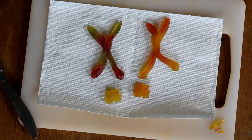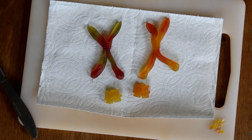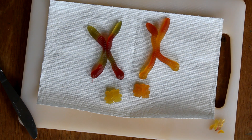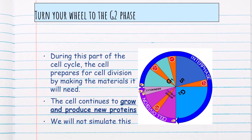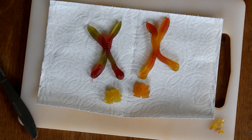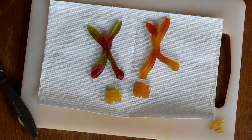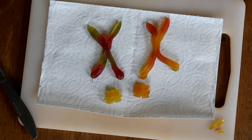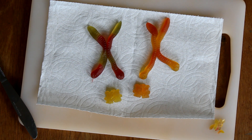Once the cell gets to S phase it doubles its DNA to get ready for division. G2 phase is when it duplicates everything else — all the other proteins, organelles, and so on. Basically, it's grown and got the DNA ready, which signals the cell that it's ready to start preparing for division. G1, S, and G2 together make up interphase.